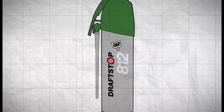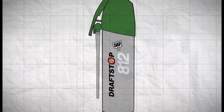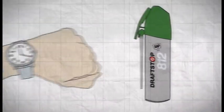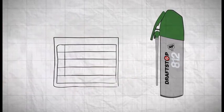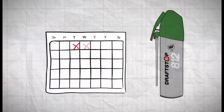With the DAP DraftStop 812 Polyurethane Window Indoor Foam with the Stop & Store applicator, there's no hurry to finish the can. Because we give you more than a few minutes to use the can of our foam, we give you 30 days.